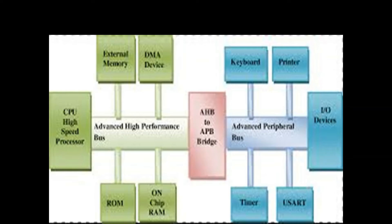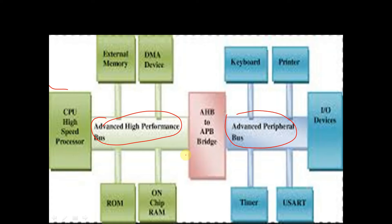This is a basic block diagram of AMBA AHB bus protocol where the AHB bus interface and APB bus interface are connected using an AHB to APB bridge. We have already completed our advanced high performance bus, that is AHB bus, and now we are going to start with advanced peripheral bus, that is APB bus.